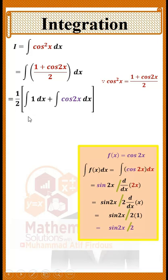So we have the integral of 1 equal to x, and the integral of cos2x equal to sin2x / 2. Multiplying through by 1/2, the final answer is x/2 + sin2x/4 + C.